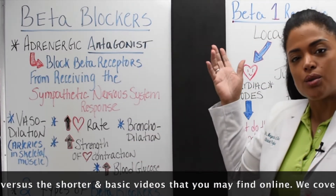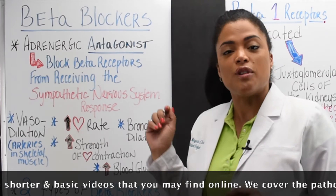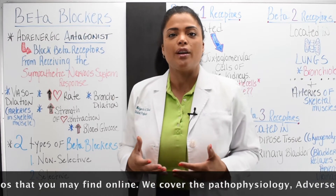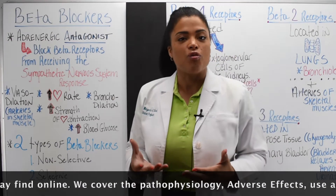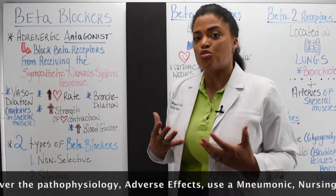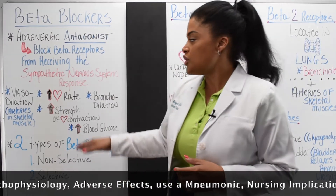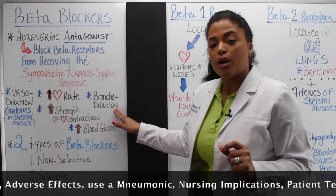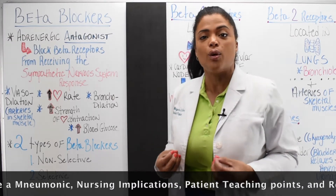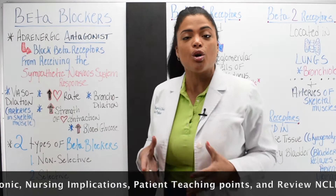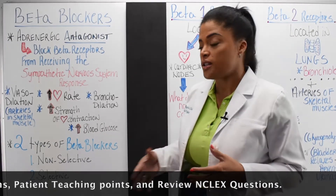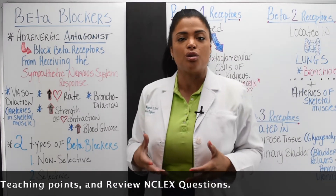Beta blockers block beta receptors from receiving the sympathetic nervous system response. This response is responsible for the fight-or-flight sensation you get whenever you are walking, running, or under stressful situations, because it's driven by the hormone adrenaline. When adrenaline is secreted in your body, it results in an increased heart rate, the bronchioles dilate for open airways, vasodilation of arteries in skeletal muscles increases blood flow, the strength of heart contraction increases, and you get an elevated blood sugar.